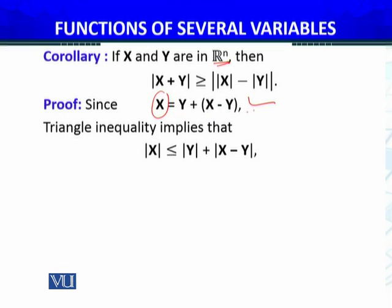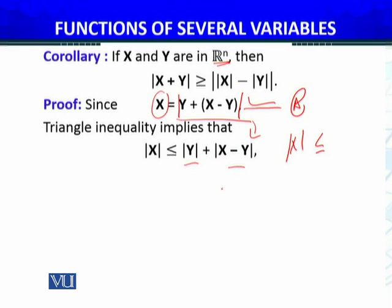If I add the vector x here, equality holds. The triangle inequality, which I have just proved, I will implement it. That will give the magnitude of x, which will be less than or equal to — using the triangle inequality on the right hand side — giving us ‖y‖ less than or equal to ‖x minus y‖ norm.